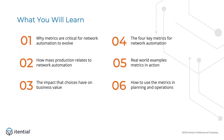In today's session, I'm going to explain why metrics are critical for network automation to evolve. I'll explain how the factory model relates to network automation and how choices that automation teams make have an impact on business value. I'll also define the four key metrics for network automation and provide some real-world examples. Finally, I'll describe how to use these metrics both in the planning phases of automation as well as in measuring and managing automation success in the operational phases.